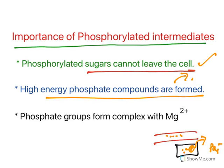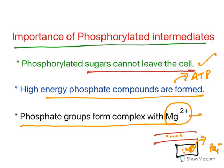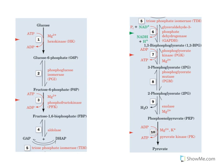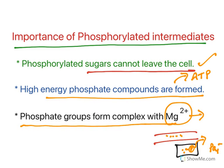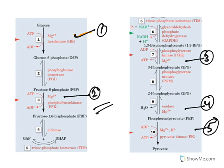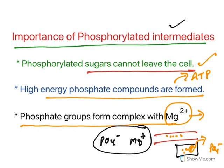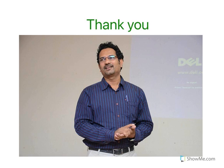The second importance: high energy phosphate compounds are formed. As seen, 1,3-bisphosphoglycerate and phosphoenolpyruvate are both phosphorylated high energy compounds that release ATP. The third importance: phosphate groups form complexes with magnesium. Magnesium is a cofactor that helps enzyme function. In glycolysis, out of 10 steps, 5 steps require magnesium. Because of the negative charge of phosphate, it combines with magnesium and attaches to the enzyme, making the reaction proceed smoothly. These are the importances of phosphorylated intermediates — thank you for watching.